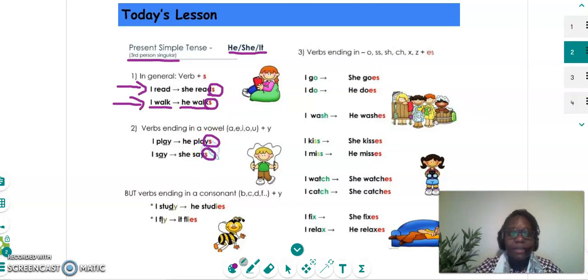But then, there are some verbs where we need to use I, E, S. Okay. And that happens when the verb ends with a Y. Okay. So, here we've got an example. I fly. Now, if we say it, like the bee, we need to say it flies. Okay.